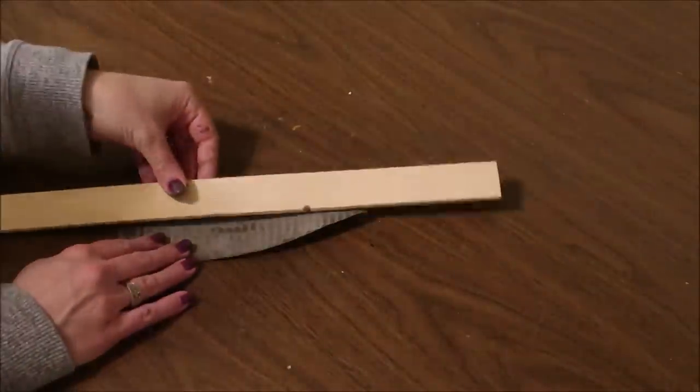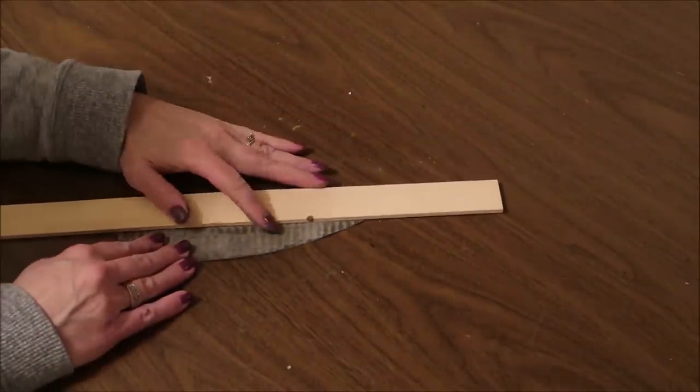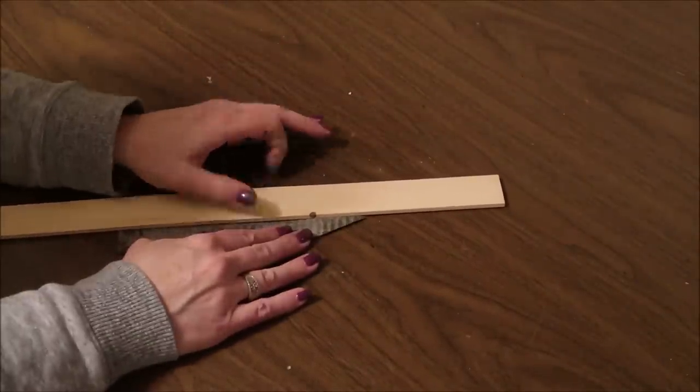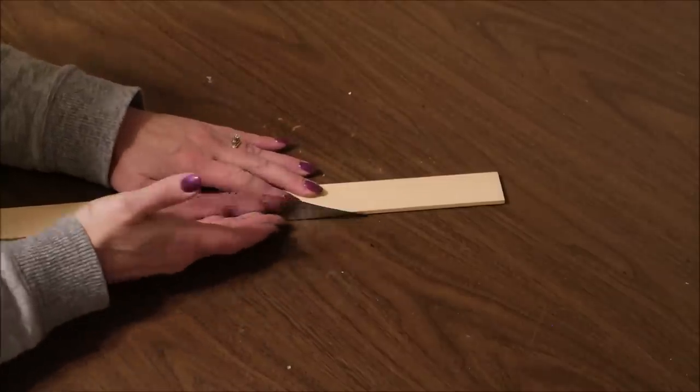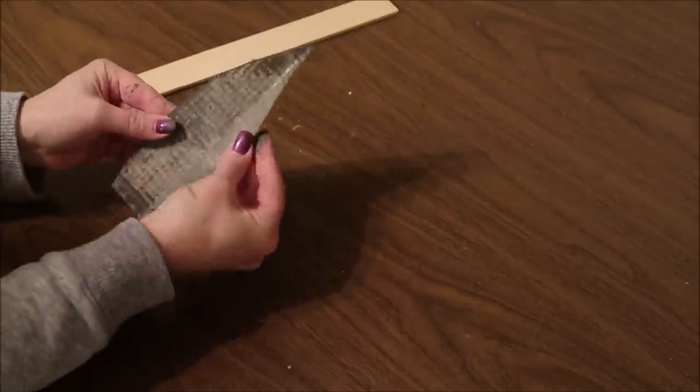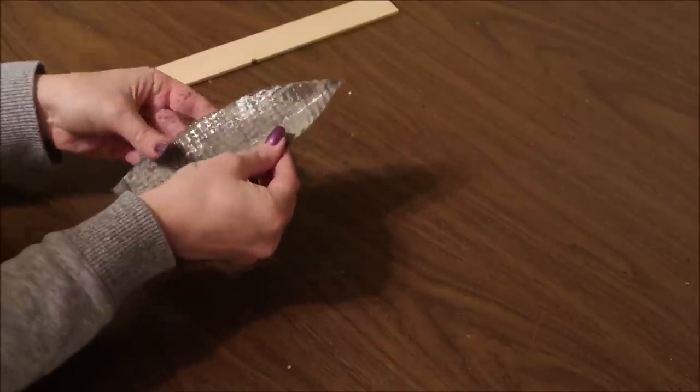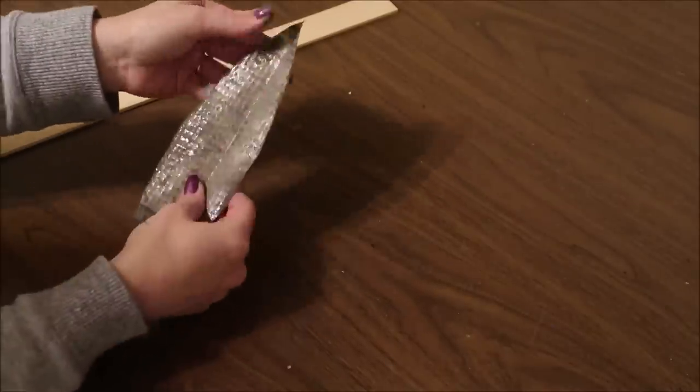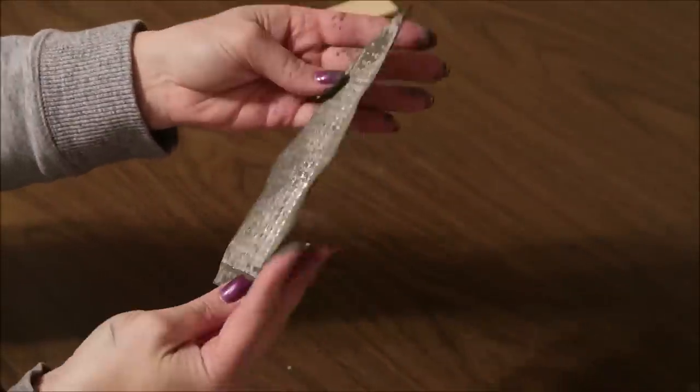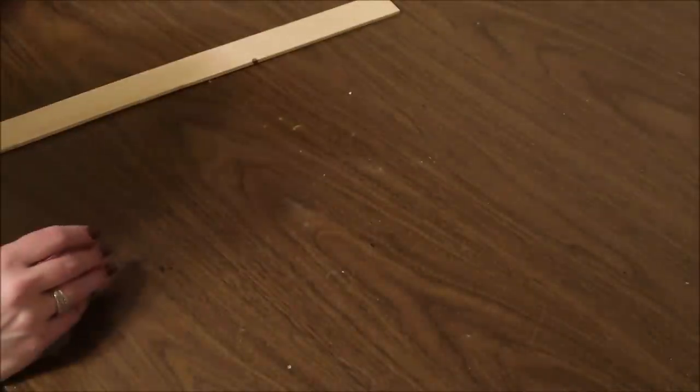For this flower I want the petals to have a definite crease down the center, so here I'm using a paint stirring stick. You could use a ruler or any other straight edge. I'm folding the petal in half and just shaping it a little bit more. This gives it a different look than that first flower that I made.